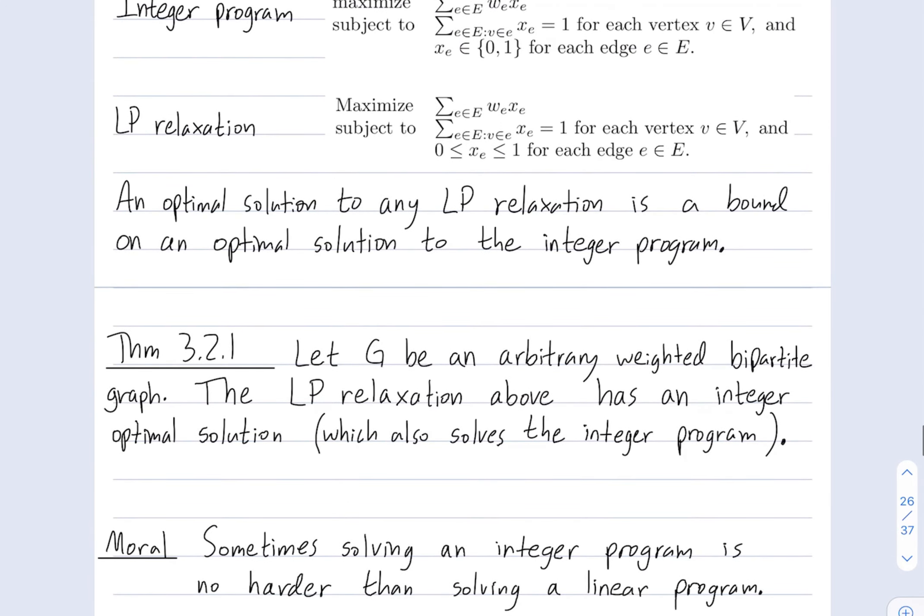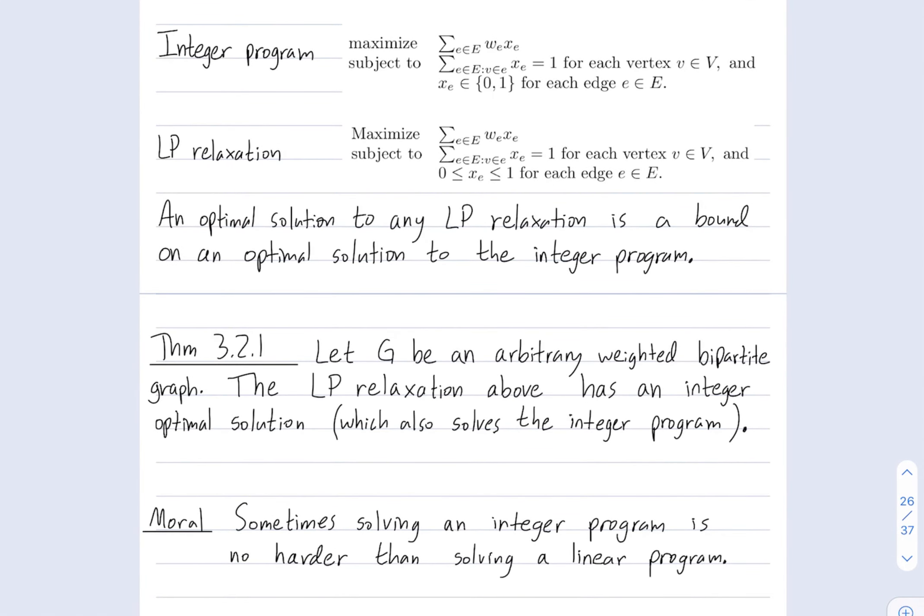This particular integer program is easy to solve in the following sense. There's a theorem, which says the LP relaxation has an integer optimal solution. So, when you solve this LP relaxation, you can actually always find an optimal solution in which all of the variables, xe, are integers, either 0 or 1. So, for this particular problem, the optimal value of the LP relaxation is exactly the same as the optimal value for the integer program. That doesn't happen in general, but it does happen for this class of matching problems.